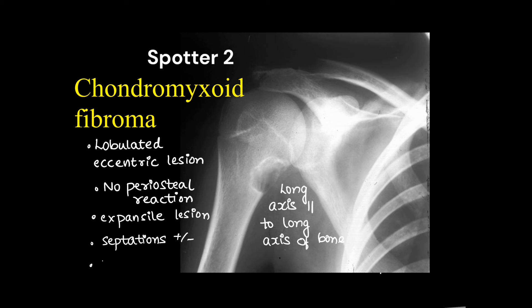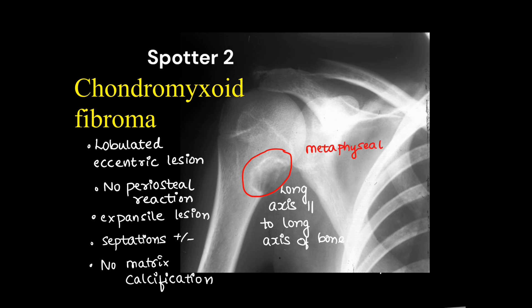Septations may or may not be present — here they are seen. There will be no matrix calcification. The location is usually metaphyseal and the lesion will have sclerotic margins, also known as peri-lesional sclerosis.